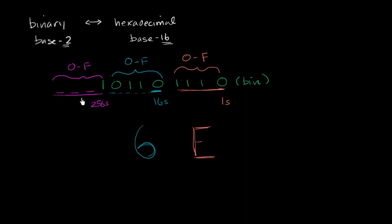And then how many 256s do I have? Well, I only have one 256. One 256. So this number in hexadecimal, and now I could write that. This is in hexadecimal right over here, is 16E. One 6E.